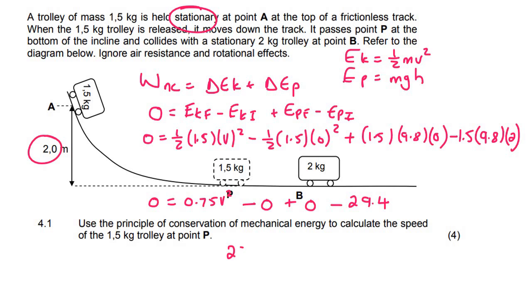And so now we can take the 29.4 over to the left and then divide by 0.75 and that gives us 39.2. And then remember to square root. And so your final answer is 6.26 meters per second.